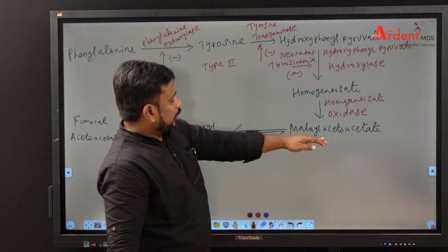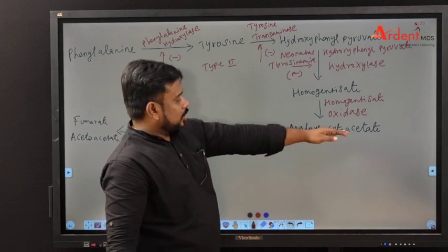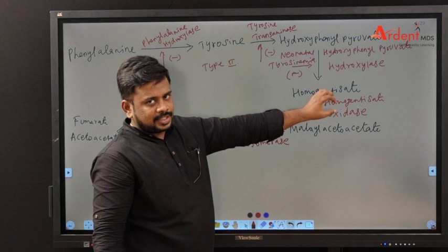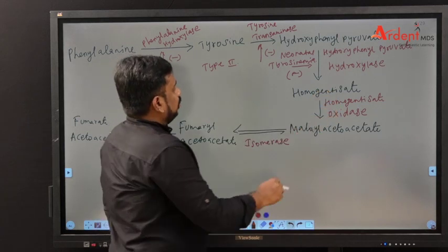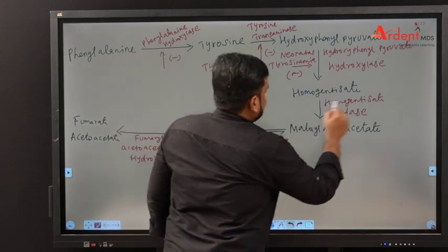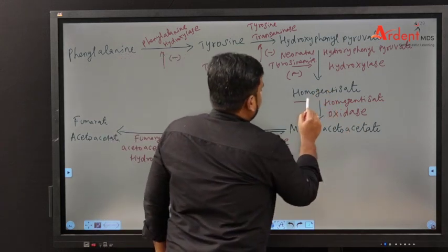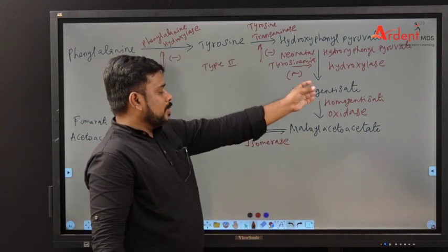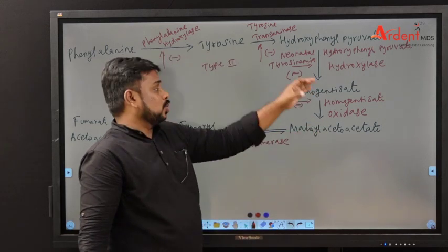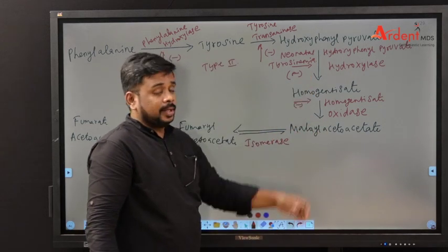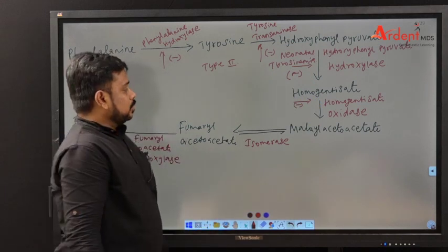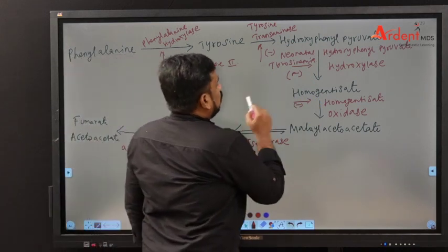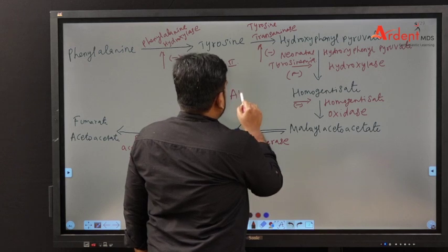Homogentisate is converted into maleylacetoacetate by the enzyme homogentisate oxidase. A defect in this enzyme means homogentisate cannot be converted to maleylacetoacetate, so homogentisate accumulates — this leads to alkaptonuria.